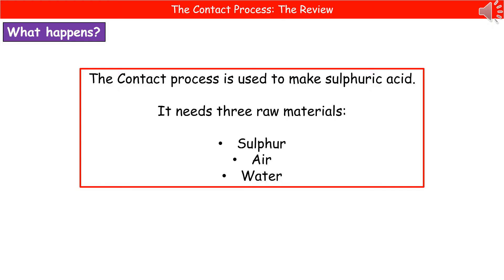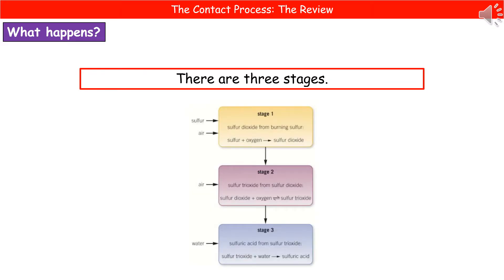In order to make the sulfuric acid, we need three raw materials: sulfur, air, and water. The contact process itself is made up of three stages, which are summarized in the diagram just below there.